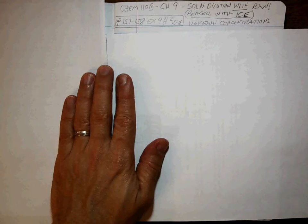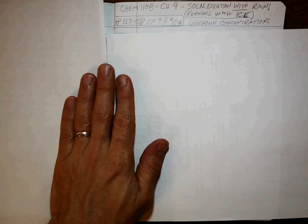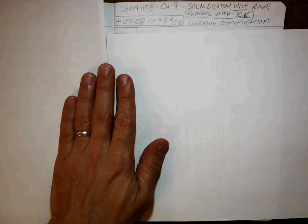Welcome back, my friends, to the show that never seems to end. This is Chem 10B, Chapter 9, Solution Dilution with Reaction. In other words, beakers with ice. The unknown concentration story.